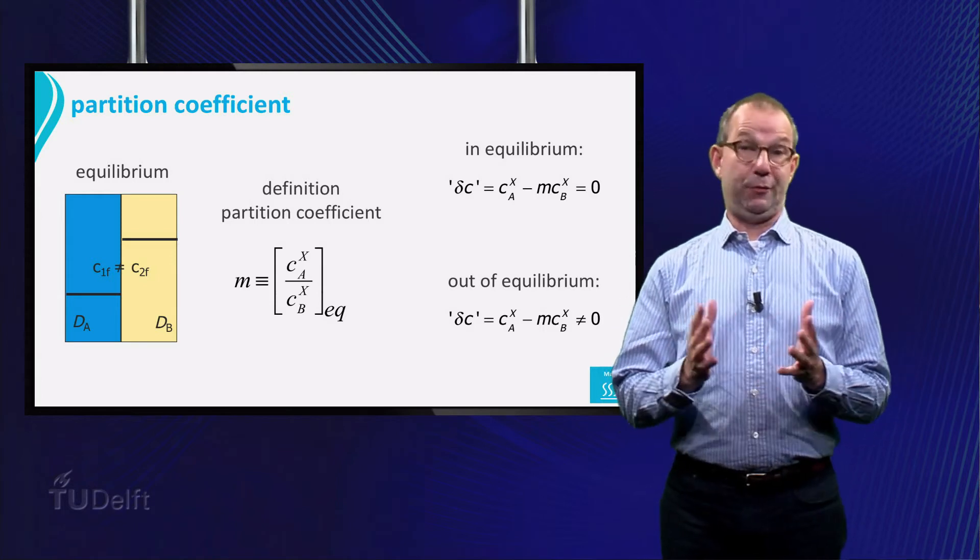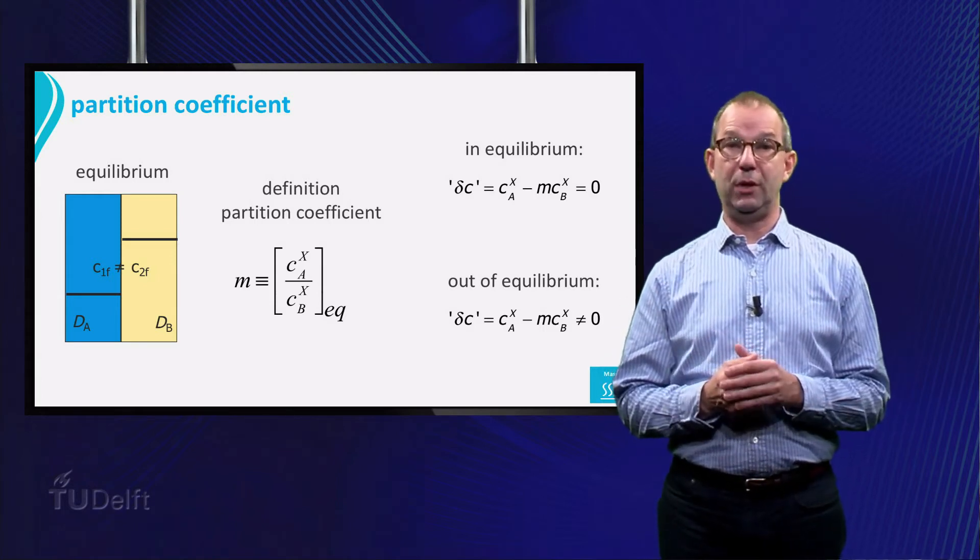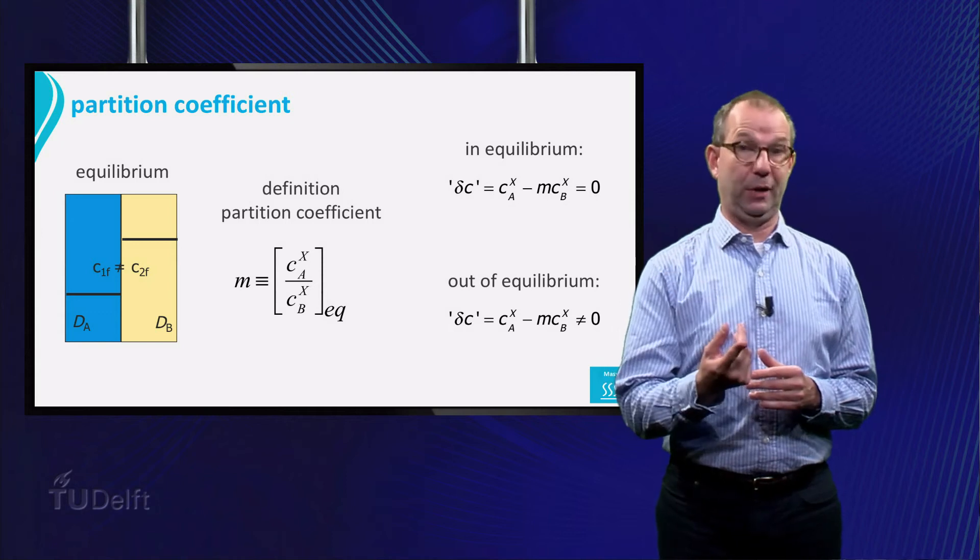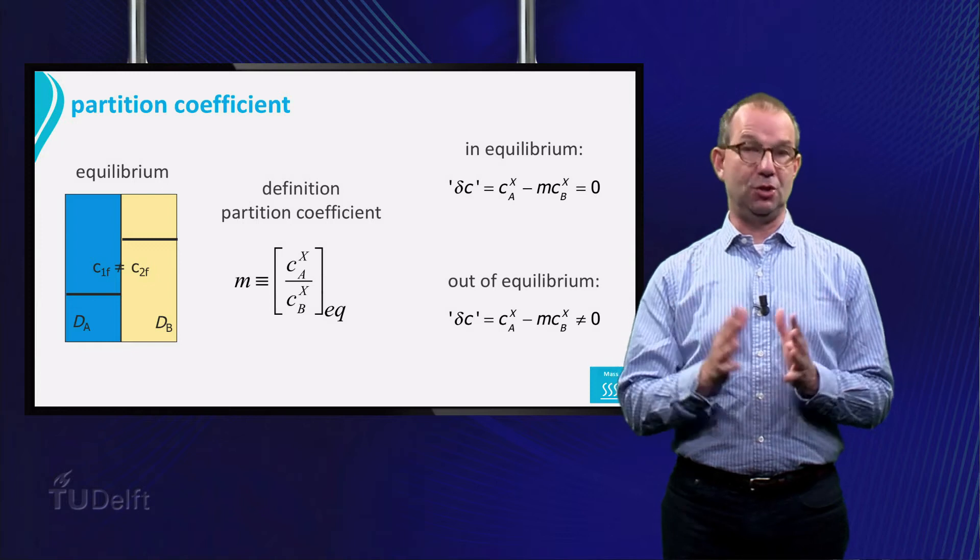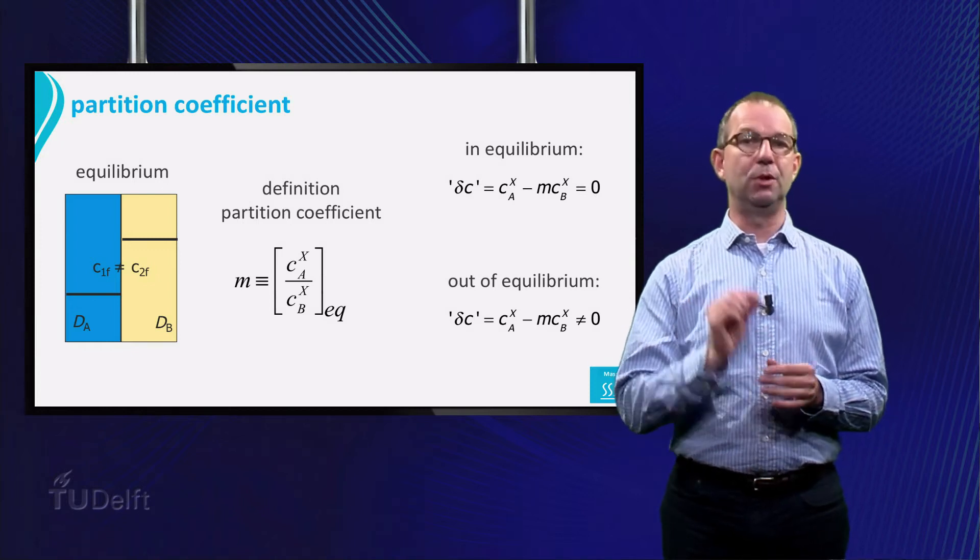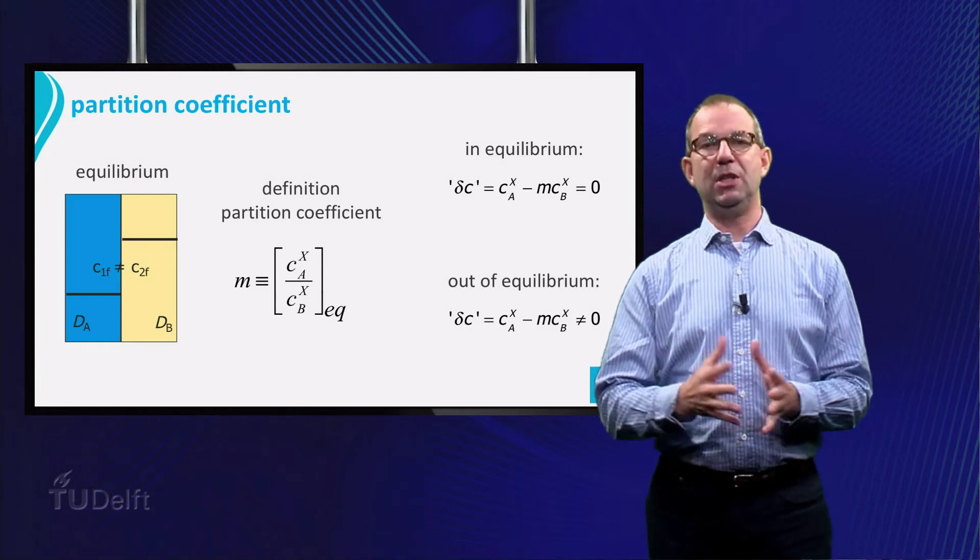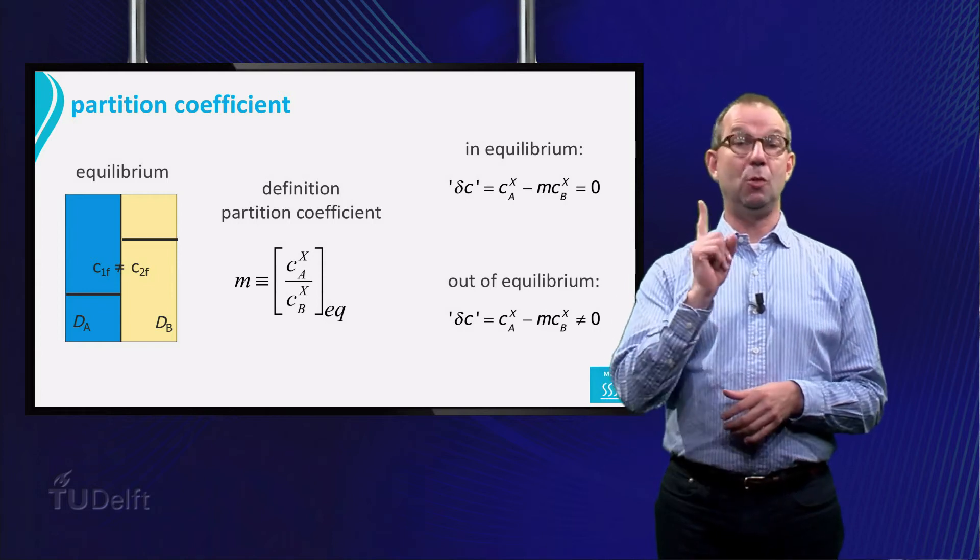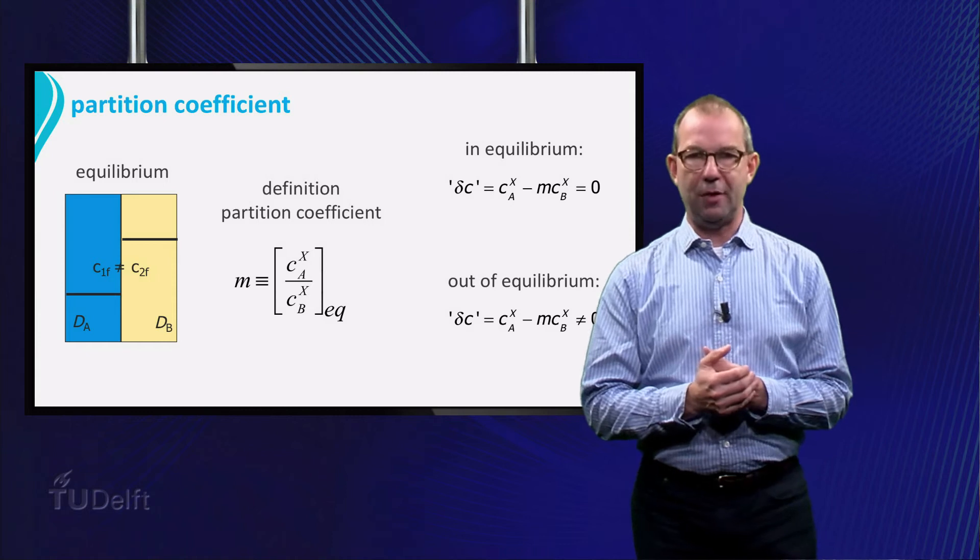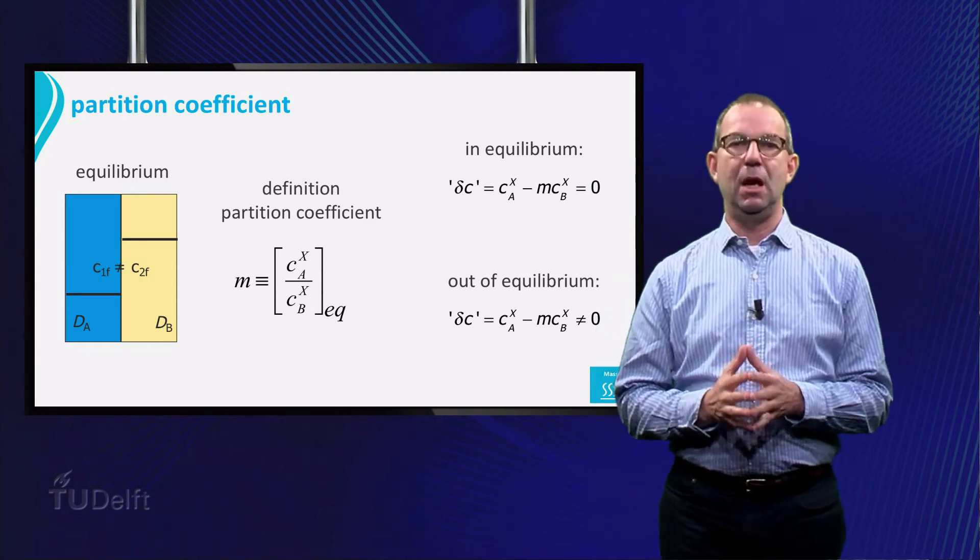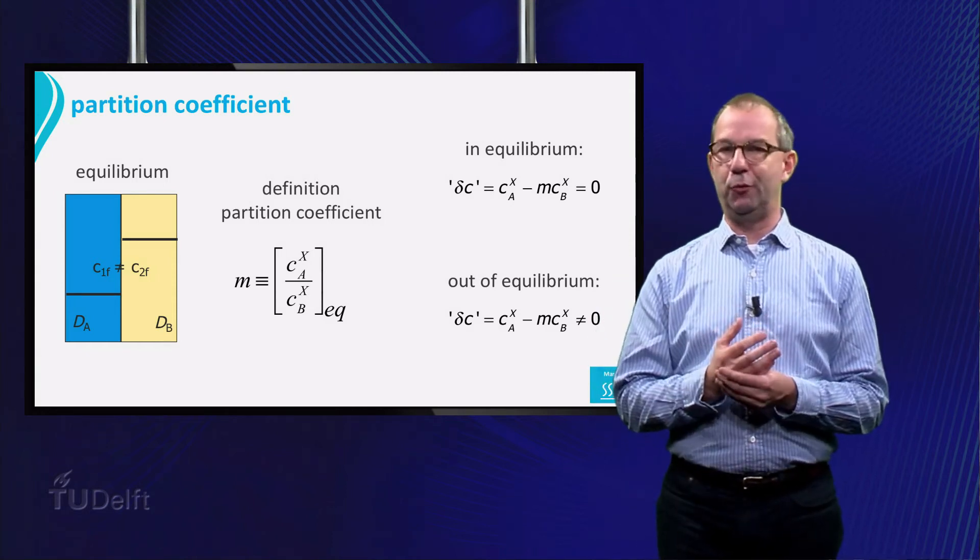Note that the old definition still holds if we don't look across an interface. Within one liquid, in equilibrium the concentration of a dissolved species must be uniform. Actually we then say that M equals 1. In all previous examples we have been dealing with this case, and the old definition of driving force was fine.